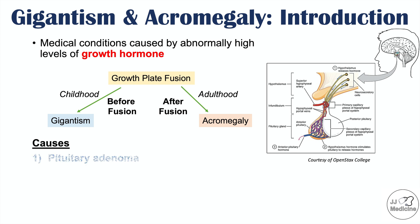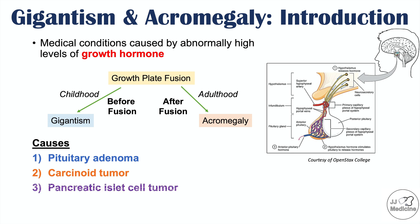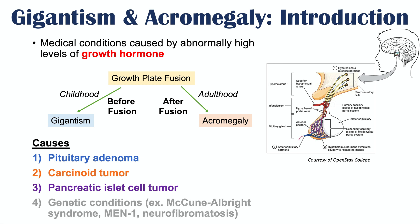Some causes of both conditions include pituitary adenomas — growths in the pituitary of cells that release too much growth hormone — as well as carcinoid tumors in different locations of the body that release very high levels of growth hormone, and pancreatic islet cell tumors that produce growth hormone. There are also genetic conditions associated with elevated growth hormone levels.